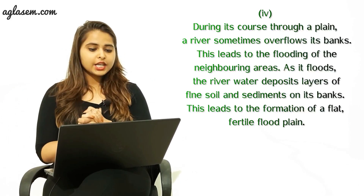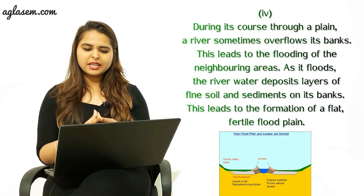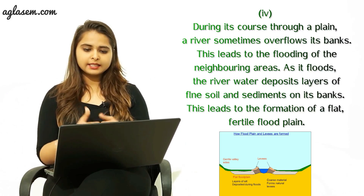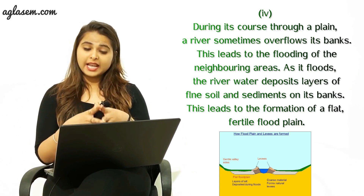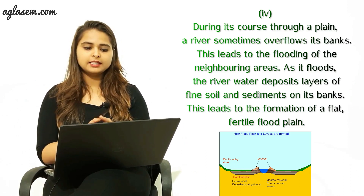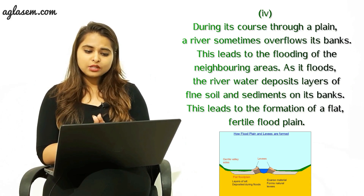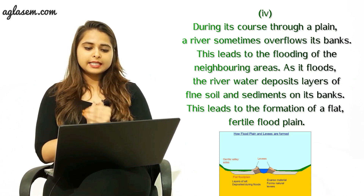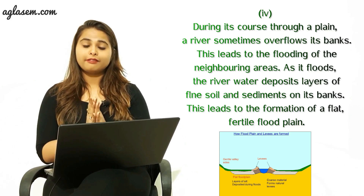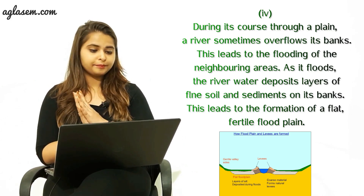The fourth question: how are flood plains formed? The answer is: during its course through a plain, a river sometimes overflows its banks. This leads to the flooding of neighboring areas. As it floods, the river water deposits layers of fine soil and sediments on its banks. This leads to the formation of a flat, fertile flood plain.